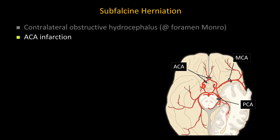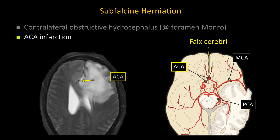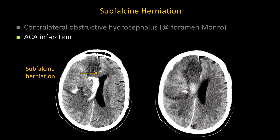Complications of subfalcine herniation include obstruction of the CSF outlet at the foramen of Monro — the passage between the lateral ventricle and the third ventricle. A large left-to-right midline shift typically causes obstruction at the foramen of Monro, resulting in contralateral dilatation of the lateral ventricle and ipsilateral compression. Another potential complication is ACA infarction: the ACA runs in close relationship to the falx cerebri, and a large subfalcine herniation can compress the ACA. This example shows a patient with right-to-left subfalcine herniation with resultant right-sided ACA territory infarction.